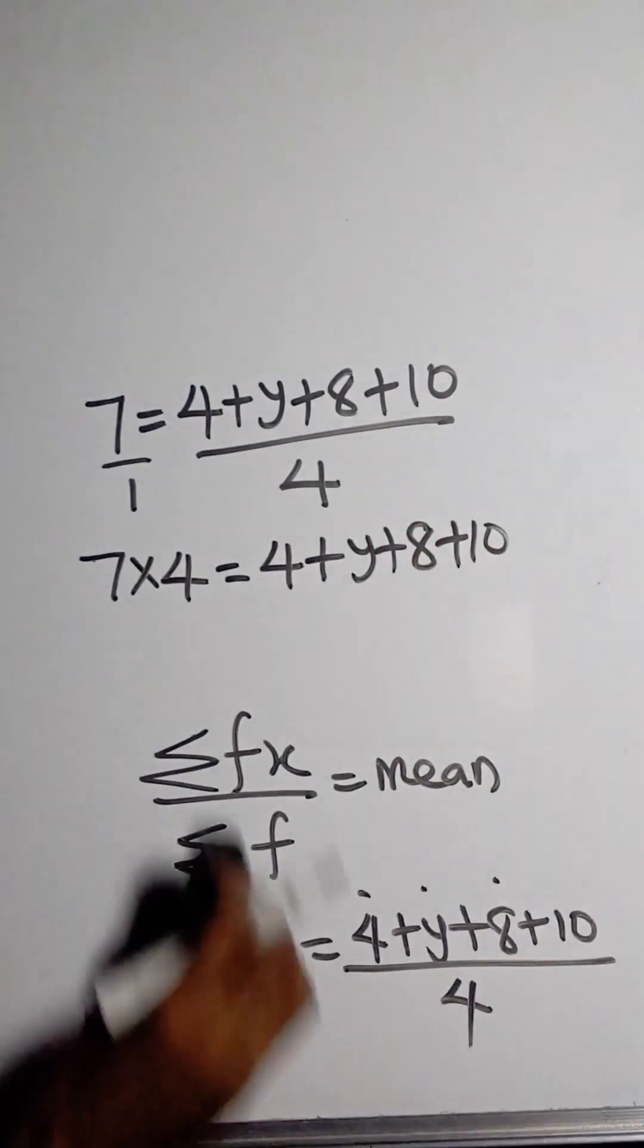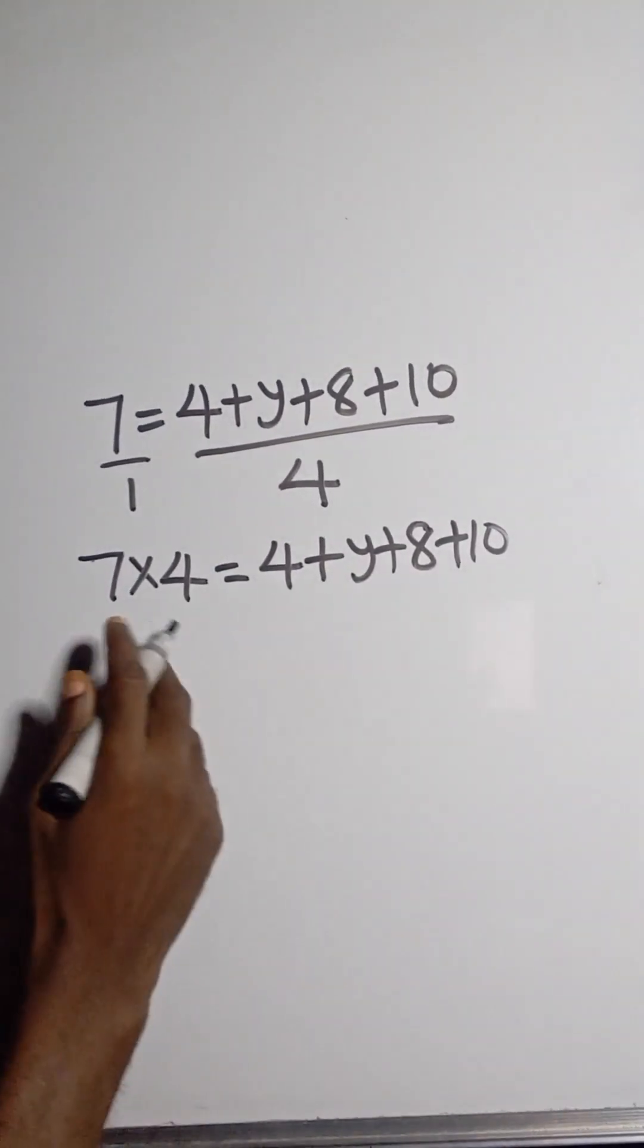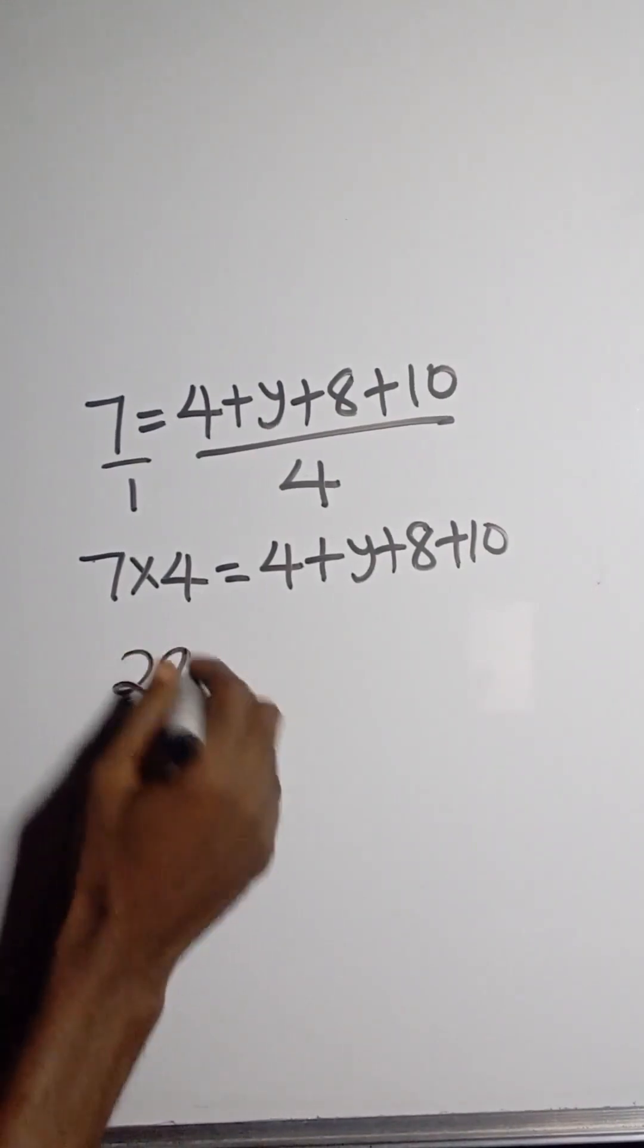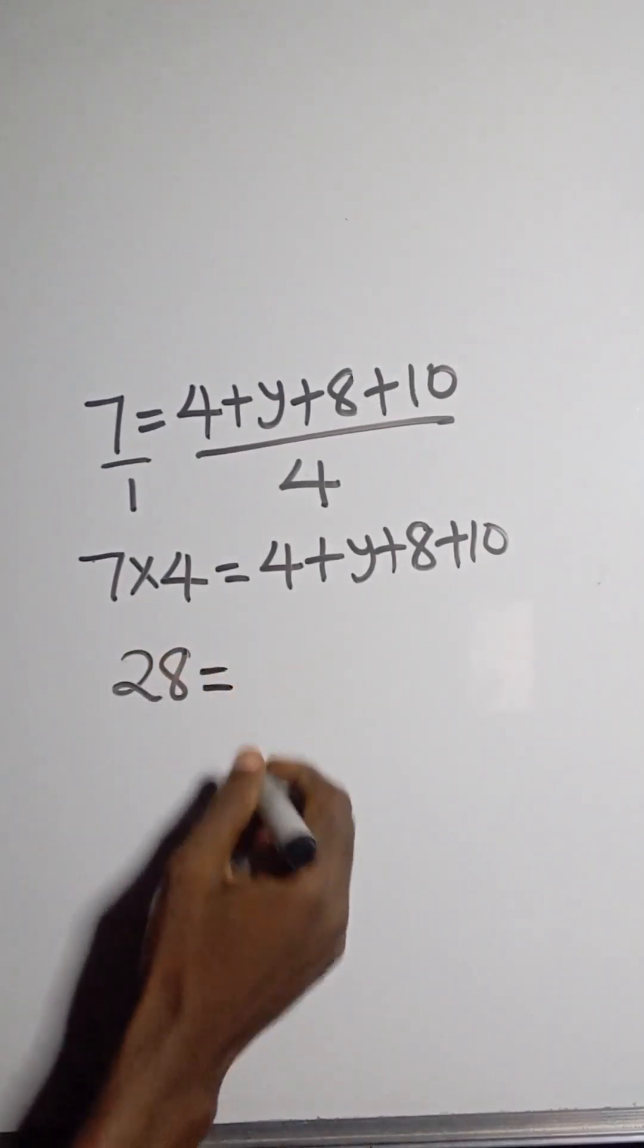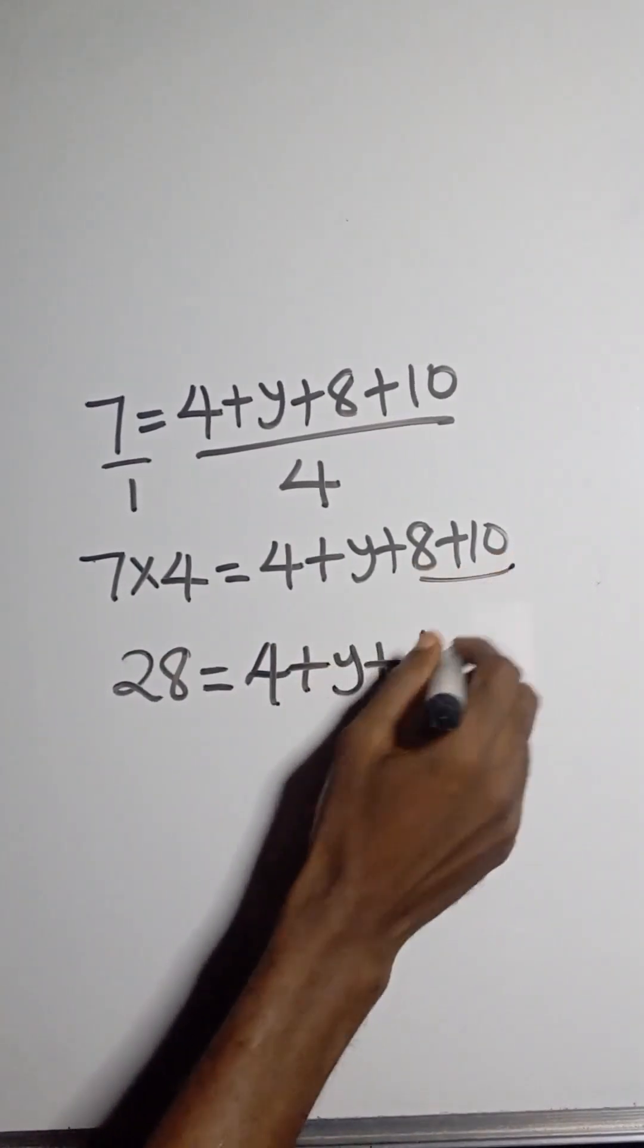Alright, so from this we can now simplify. 7 times 4 gives us 28 which is equal to 4 plus y, plus this plus this gives us 18.